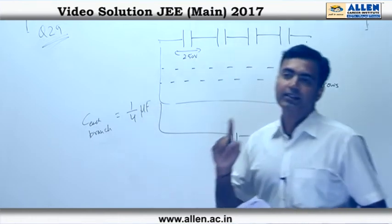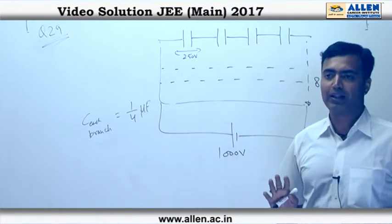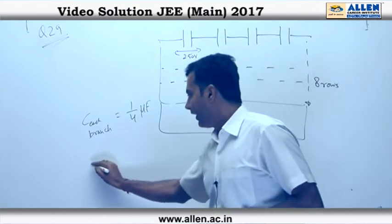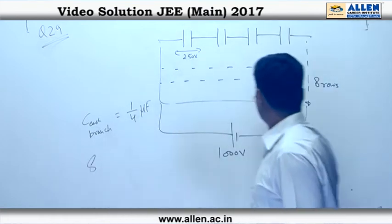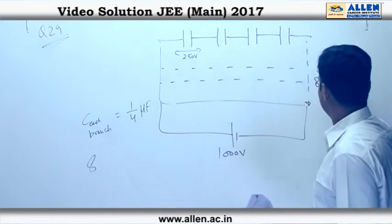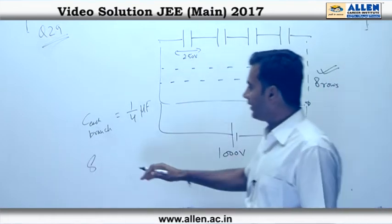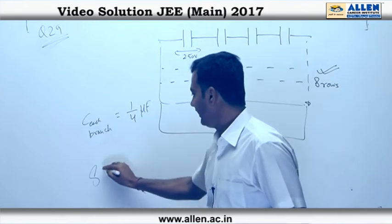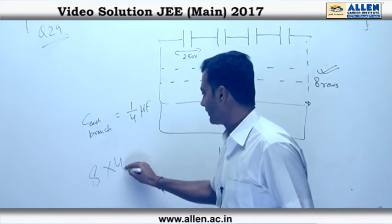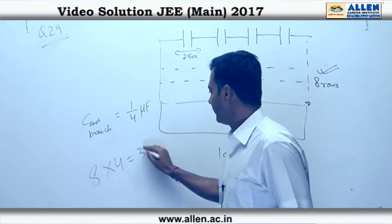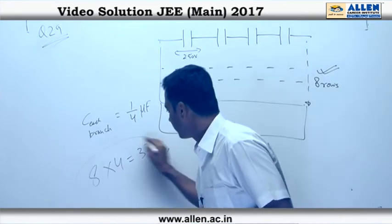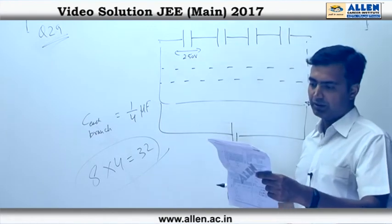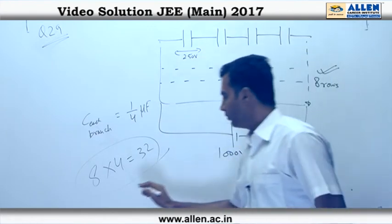The C equivalent required here is 2 microfarads. Thus, we need 8 such rows to get the required result. So, 8 rows each having 4 capacitors gives 32 capacitors in all. This is option number 2.